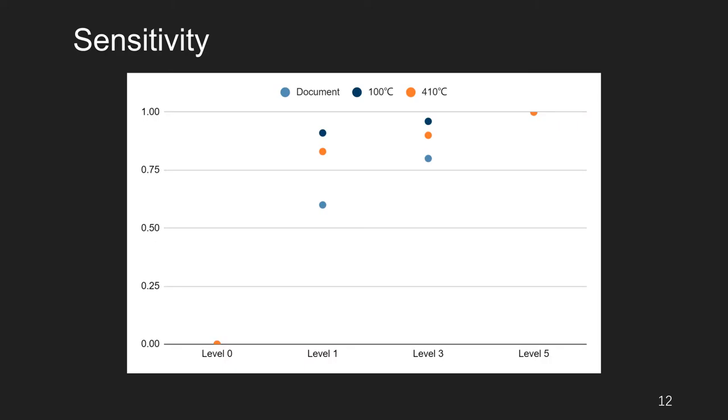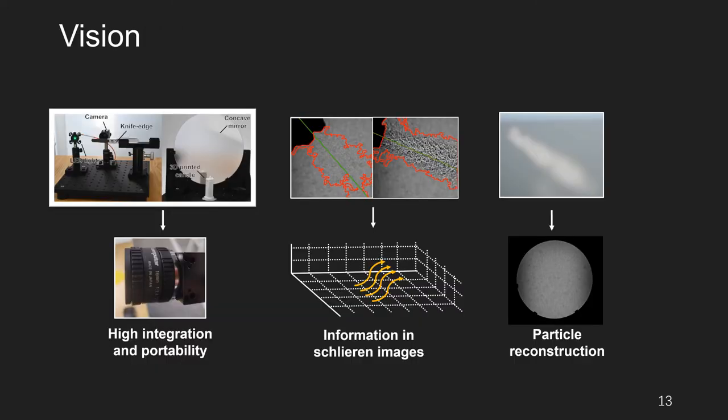So we test the sensitivity of our system using a heat gun that can blow five different levels of air volume under two airflow temperatures, and compare the calculated results with the document records. The gradient shows the sensitivity is good enough for interactions, and will become better if the temperature of the airflow is higher.